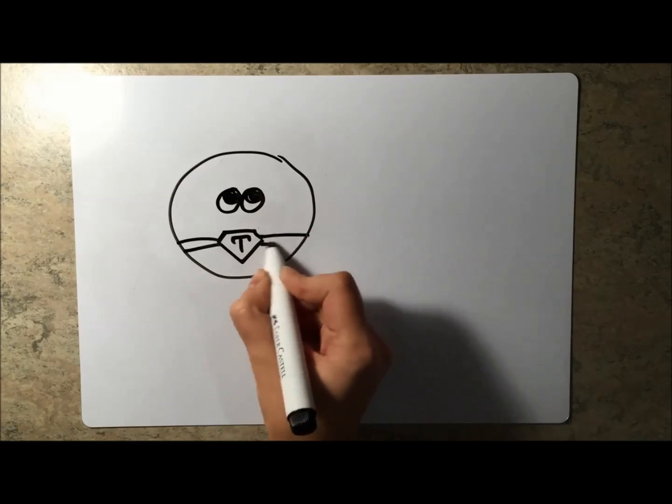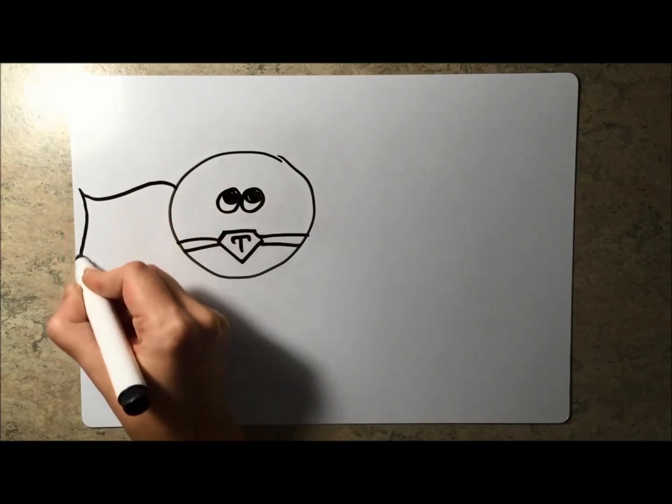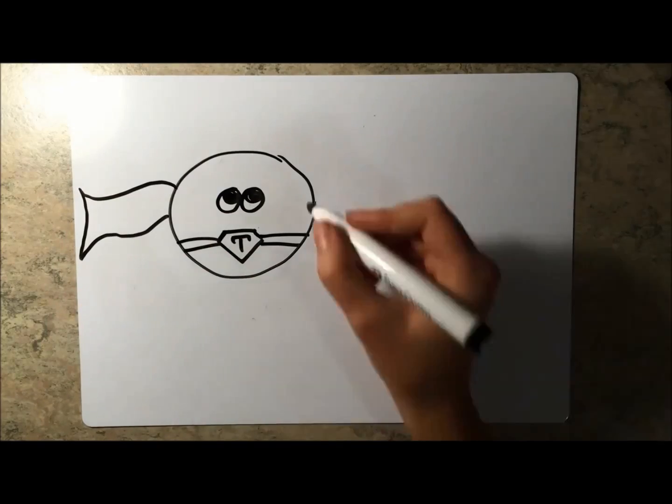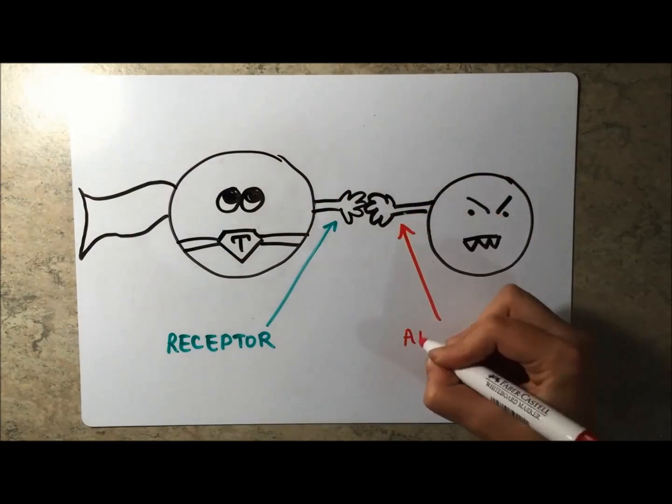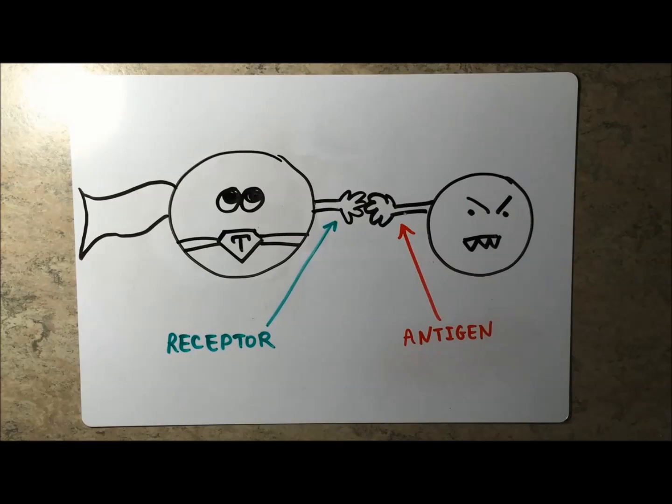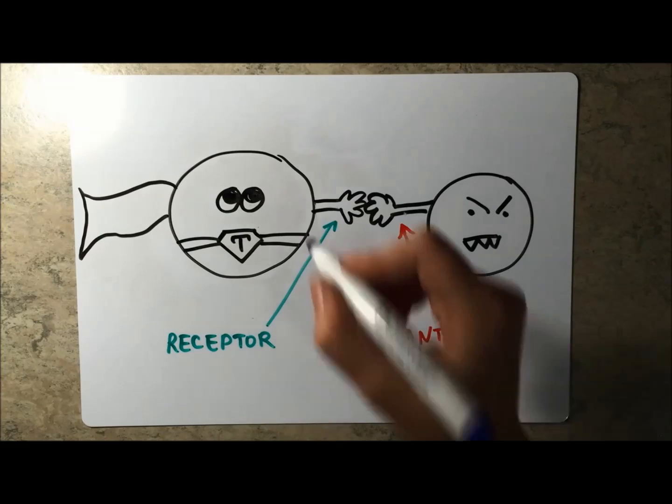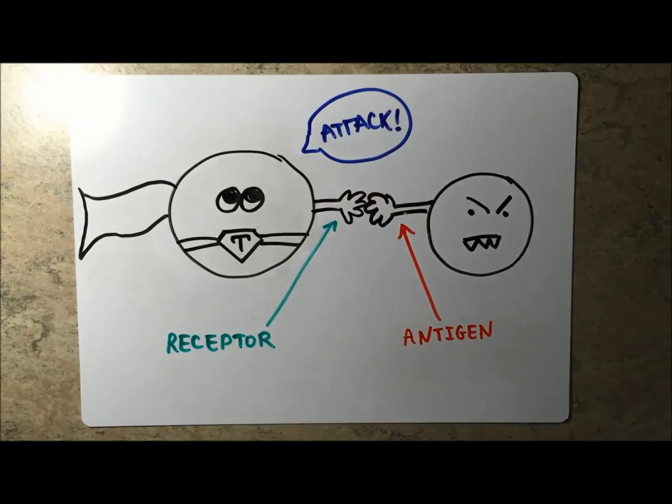T cells are a type of white blood cell in the immune system which aim to destroy cellular infections. All T cells have receptors which recognize certain labels called antigens. Antigens are substances on bad cells which trigger the immune system to start attacking them.